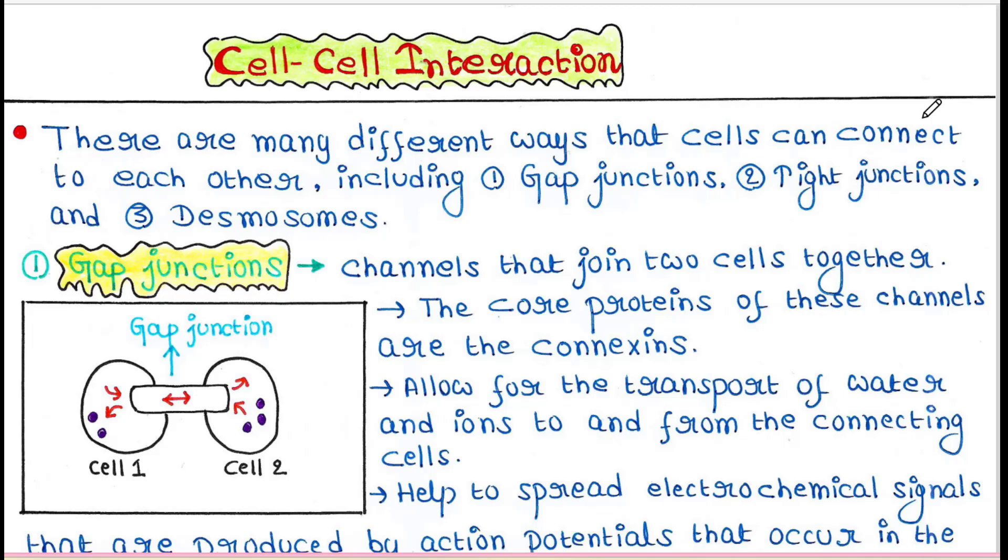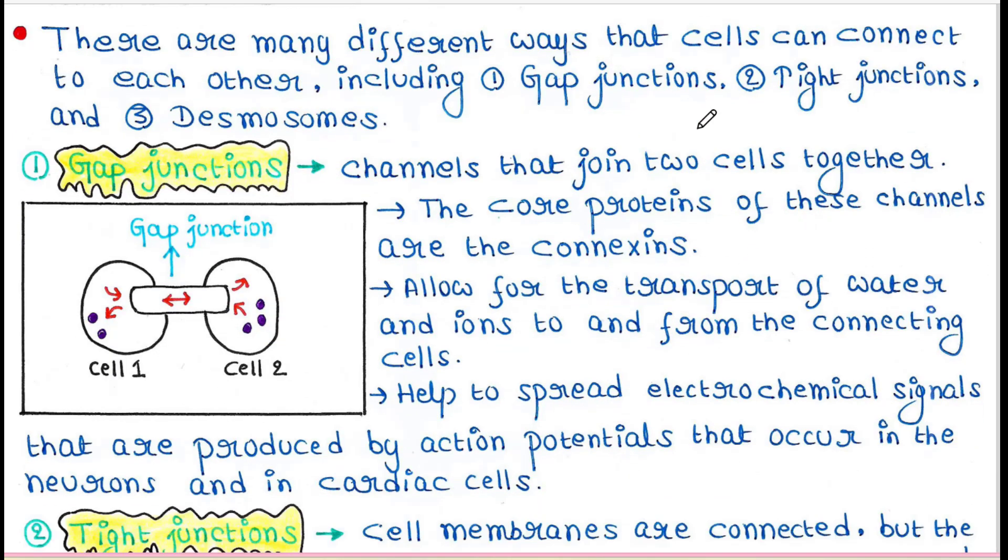There are many different ways that cells can connect to each other, including gap junctions, tight junctions, and desmosomes. We will talk about them one by one.